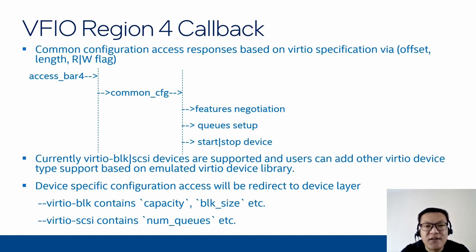Currently, virtio block and SCSI devices are added in SPDK, but we provide a common abstraction layer to allow users to add other types of virtio devices. Another important virtio device configuration section is the device-specific configuration area. This section is device-type specific. For example, for the virtio block device, capacity and block size attributes are stored in this section. For the virtio SCSI device, the number of queues attribute is stored in this section.